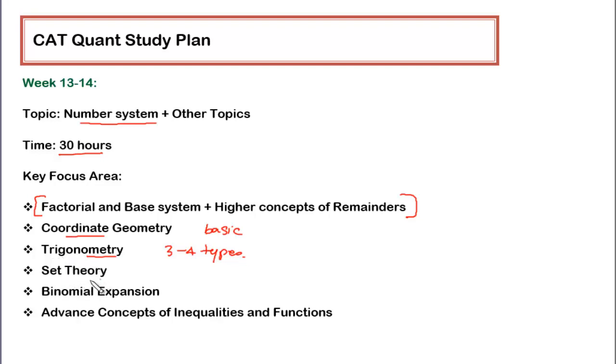You can also do basics of set theory, binomial expansion, and some advanced concepts of inequalities and functions. These are the things which you have to do in the last phase of your CAT preparation. With this, you can say that not only CAT but any other exam from the higher end is covered.